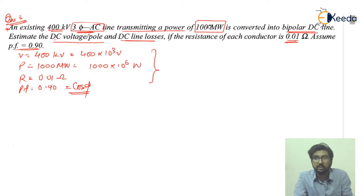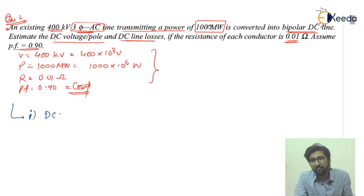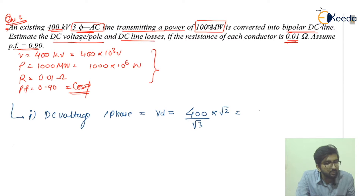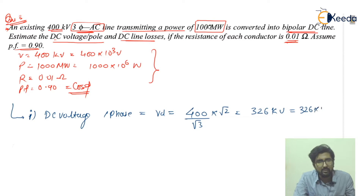First, we find the DC voltage per pole. The DC voltage per phase or per pole, Vd, is equal to 400 into root 2 divided by root 3, which comes out to be 326 kilovolt. This can be written as 326 into 10 to the power 3 volts.